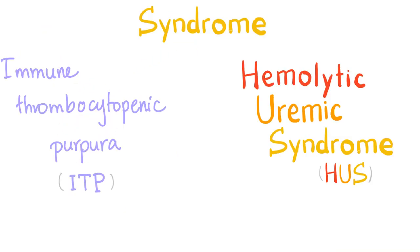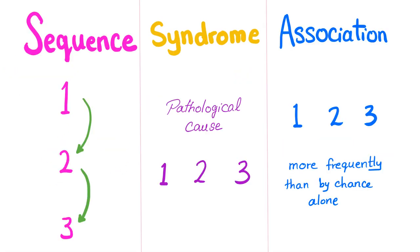In the last video we discussed immune thrombocytopenic purpura or immune thrombocytopenia, but now we have hemolytic uremic syndrome. Why didn't we call ITP a syndrome? Why is hemolytic uremic syndrome called a syndrome? Why syndrome here but not there? In medicine you have three types of things.